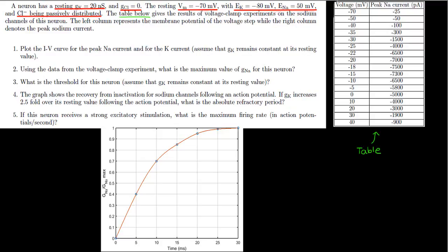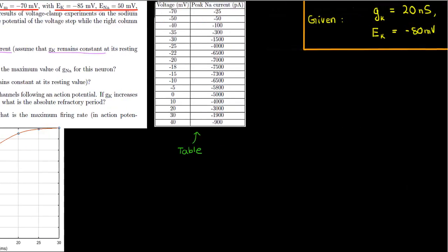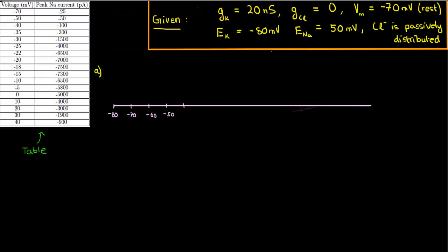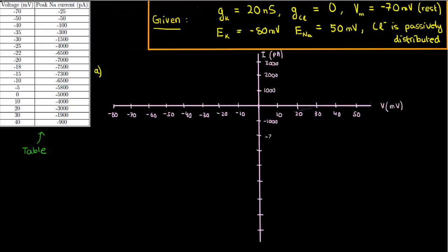The first part asks you to plot the IV curves for the sodium and potassium current. For the potassium current, you can additionally assume that the conductance of potassium is constant. I've already written the relevant given information here so we can easily refer to it without going back and forth. Plotting the IV curve for the sodium channel is easy — just mark all the points in the table on a graph and join those points with a smooth curve.